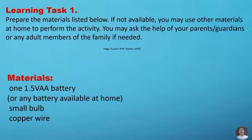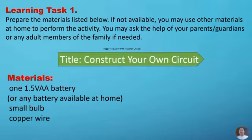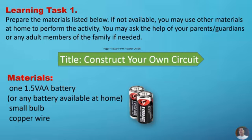Learning task number one. Prepare the materials listed below. If not available, you may use other materials at home to perform the activity. You may ask the help of your parents or guardians or any adult members of the family if needed. Title, construct your own circuit. Materials: one 1.5VAA battery or any battery available at home, small bulbs, copper wire.